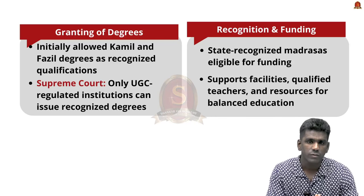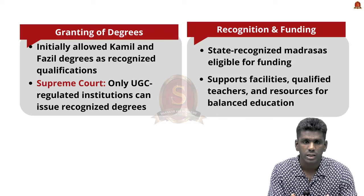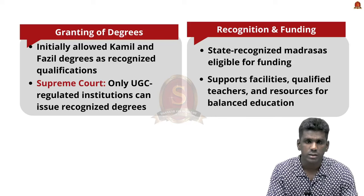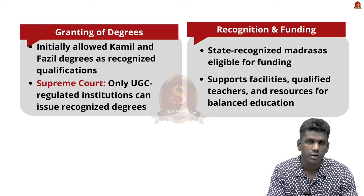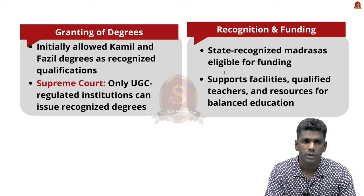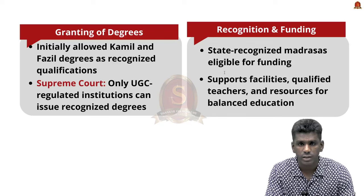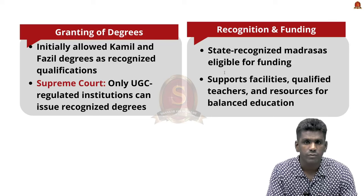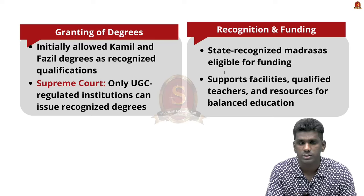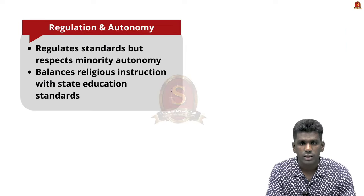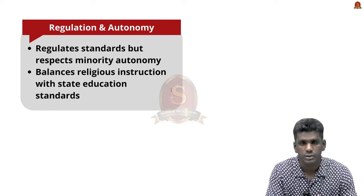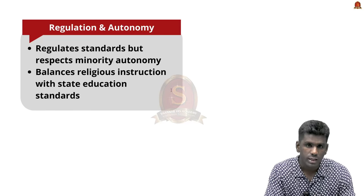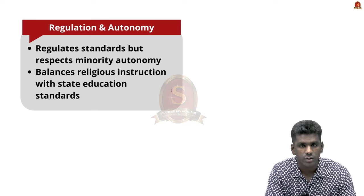However, the recent Supreme Court ruling found this provision unconstitutional because it violates the University Grants Commission Act, meaning Madrasas in Uttar Pradesh can no longer issue KAMIL and FASIL degrees. Degrees can only be issued by universities which function under UGC. Regarding recognition and funding, Madrasas that follow standards set by the Madrasa board can be recognized by the state, making them eligible for government funding and support. The Madrasa Act 2004 regulates educational standards while also respecting the minority status of these institutions, allowing them to retain autonomy in teaching religious subjects as long as they adhere to state-prescribed standards.